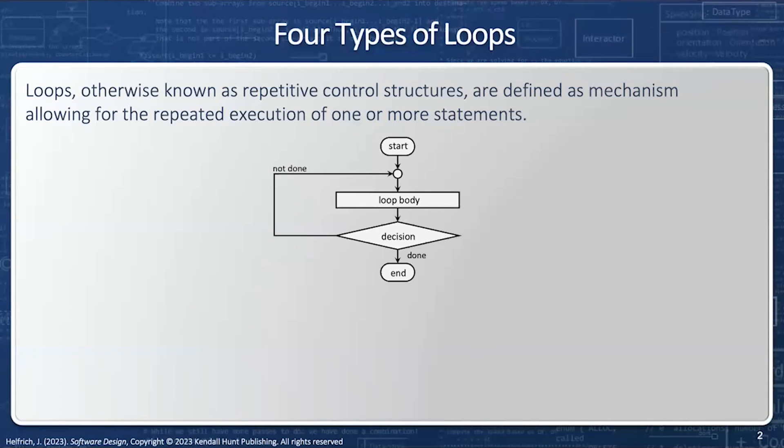Now it turns out there are exactly four different types of loops we see in the code. The first is called an event control loop. We're going to keep repeating the same line of code or same collection of lines of code until an event occurs.